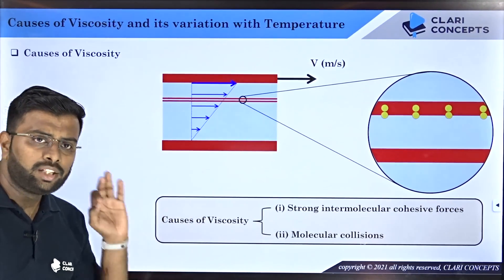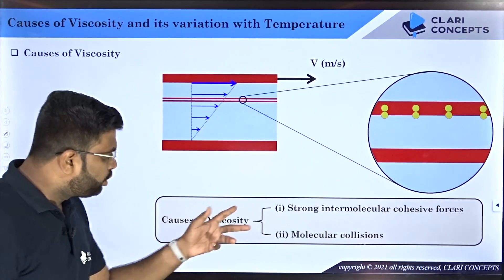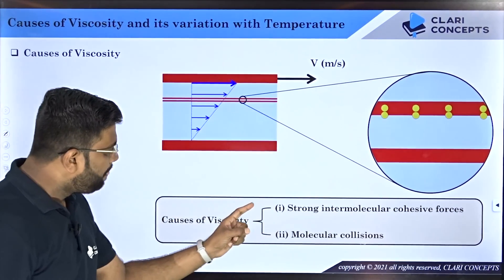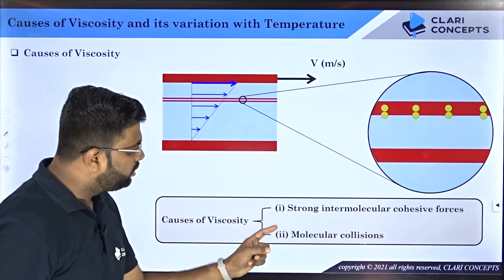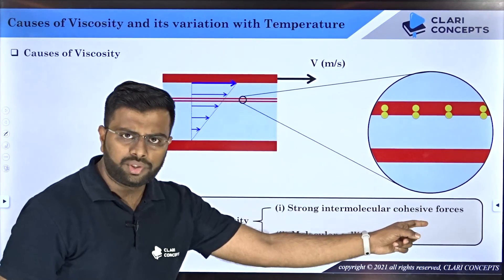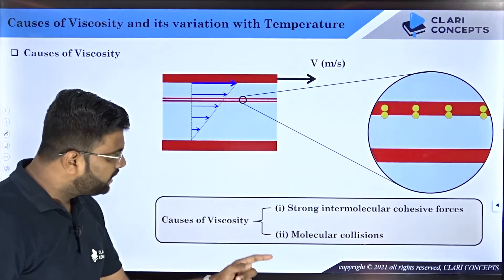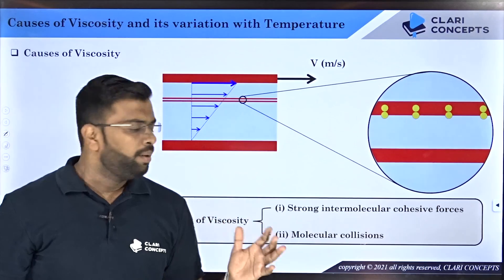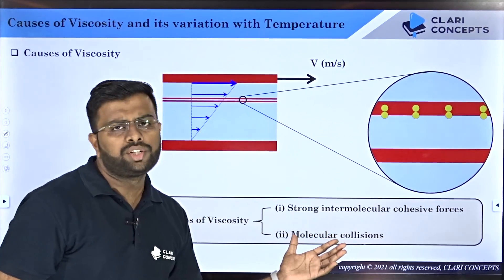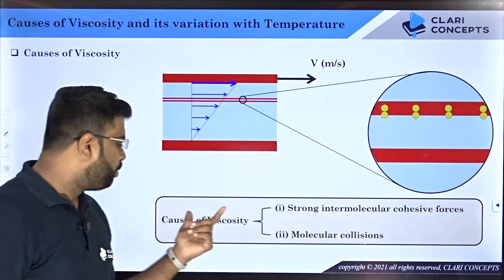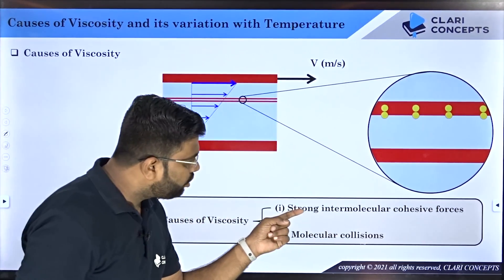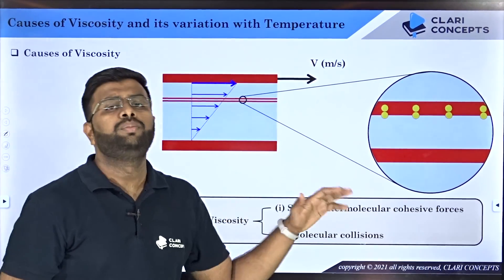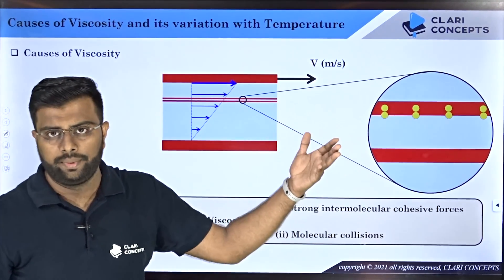So fluid has viscosity because of these two phenomena happening at the molecular level. One is because of the presence of strong intermolecular cohesive forces, and another is because of the presence of molecular collisions. The more the rate of molecular collisions in the fluid, the more is the viscosity. Greater the intermolecular cohesive forces, more is the viscosity.